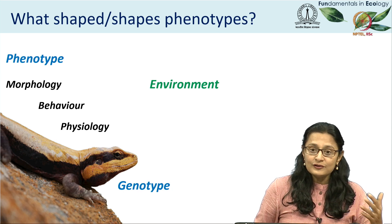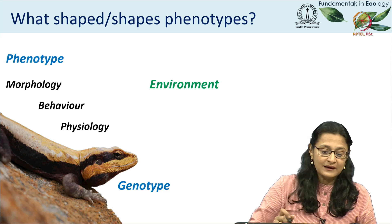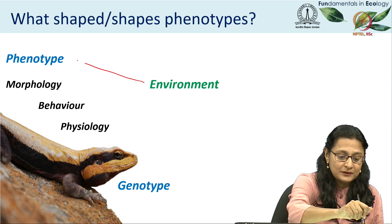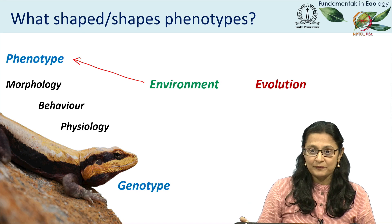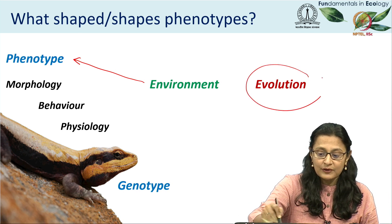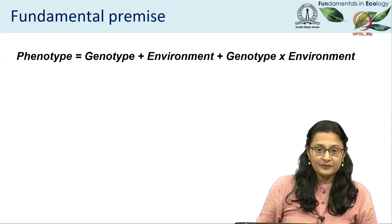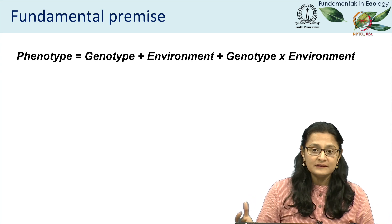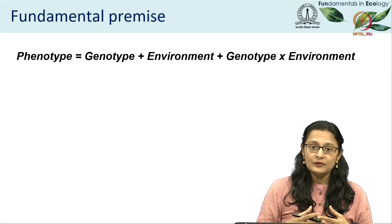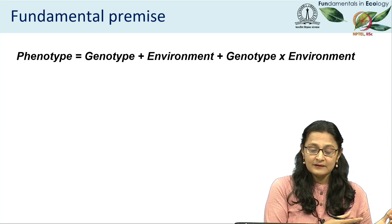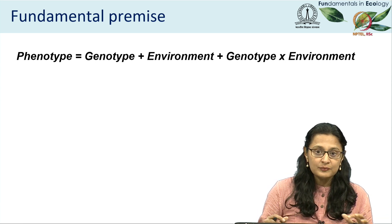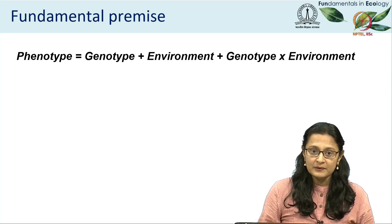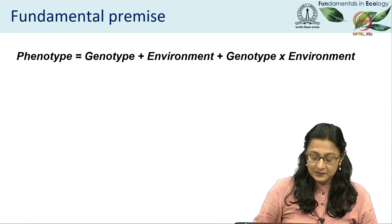What has shaped or continues to shape phenotypes? The phenotype is influenced by its environment, but that has been shaped over evolutionary time. So what a phenotype is, is an outcome of evolutionary processes. The fundamental premise is that a phenotype is an outcome of the genotype, the environment, and a genotype-by-environment interaction — and I will explain what that means in a minute.